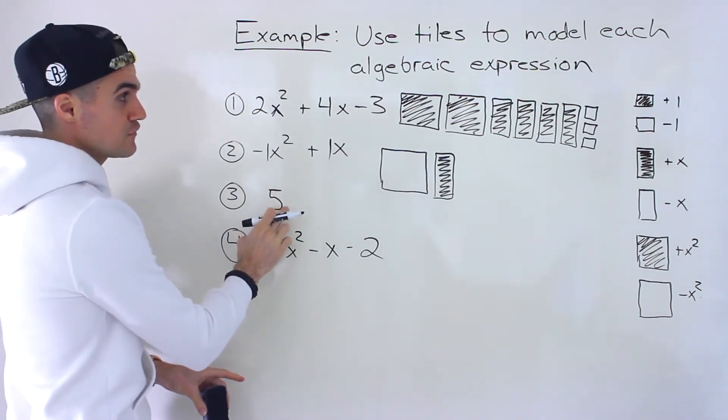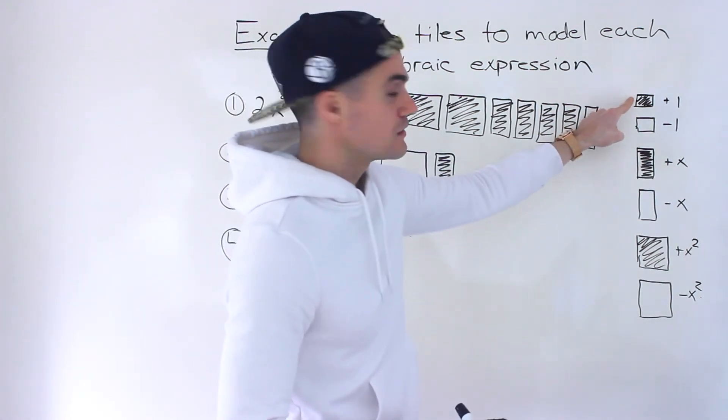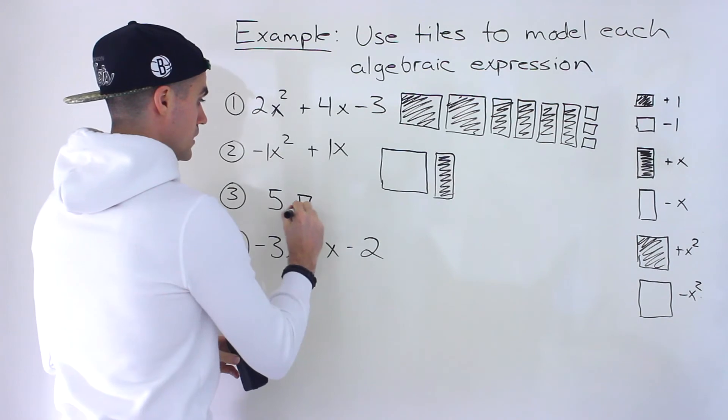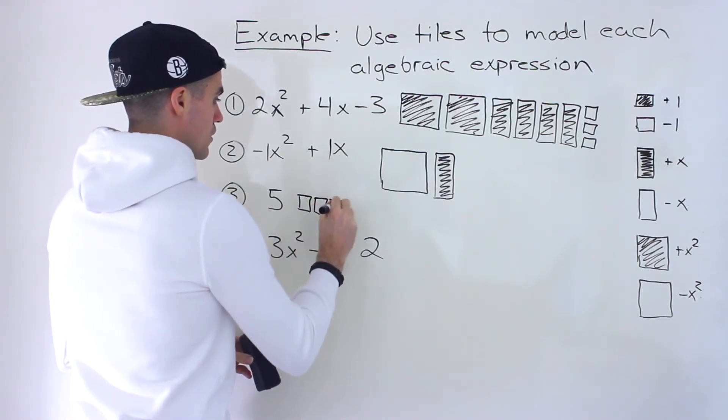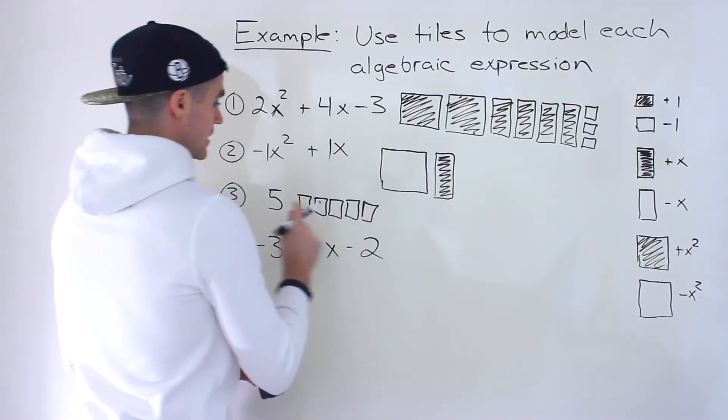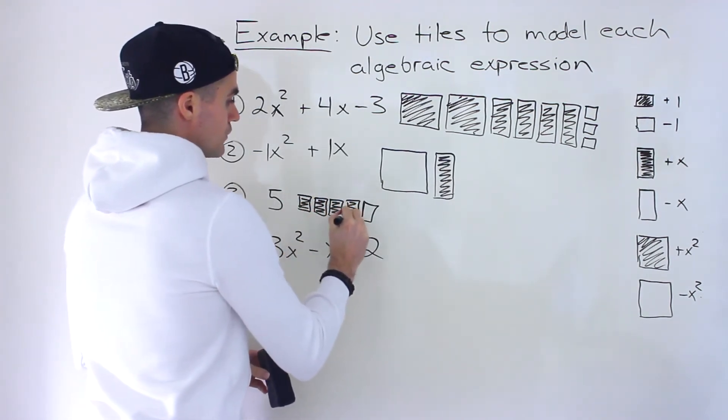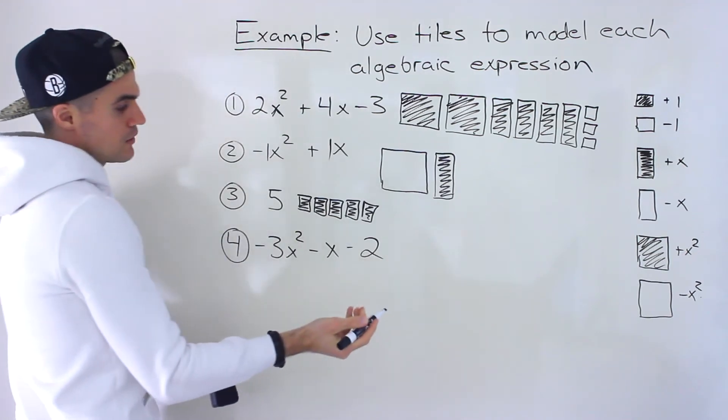Then we have positive 5. So that would be basically 5 of these small squares over here: 1, 2, 3, 4, 5. And because it's positive 5, all of these here are filled. If it was minus 5, then they would be hollow.